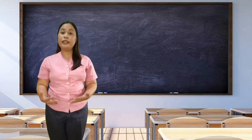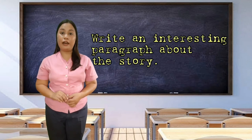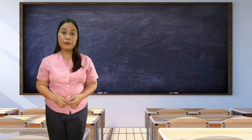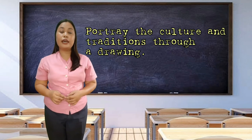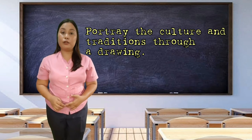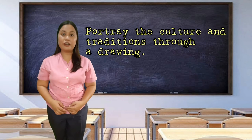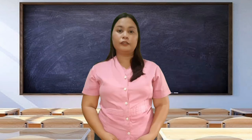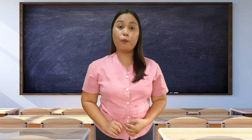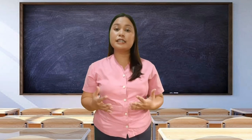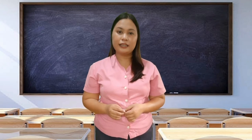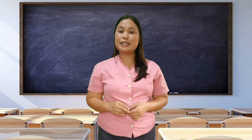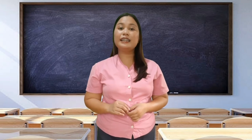After answering the Venn diagram, you are going to write an interesting paragraph about the text you have read. After writing the paragraph, you are going to portray it in a drawing. The drawing should include their traditions, their heritage, and their culture. After the drawing, you are going to assess your learning by completing the statement. You are doing well! After which, you are going to compose a paragraph about the culture that you have in your family. And after composing that paragraph, you are going to answer the assessment by selecting the letter of the correct answer.